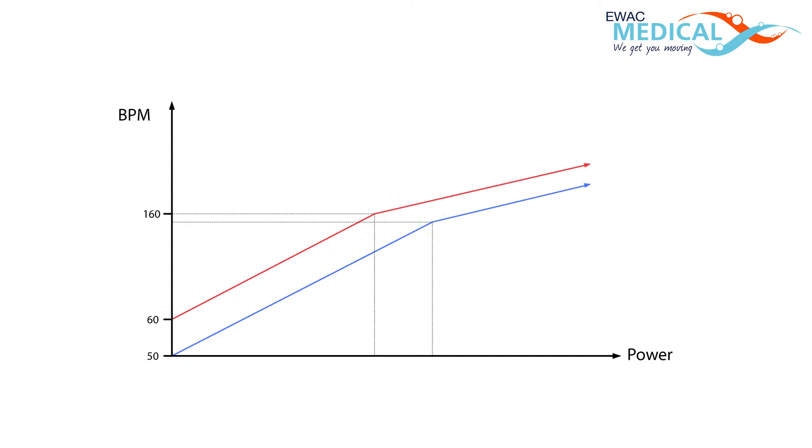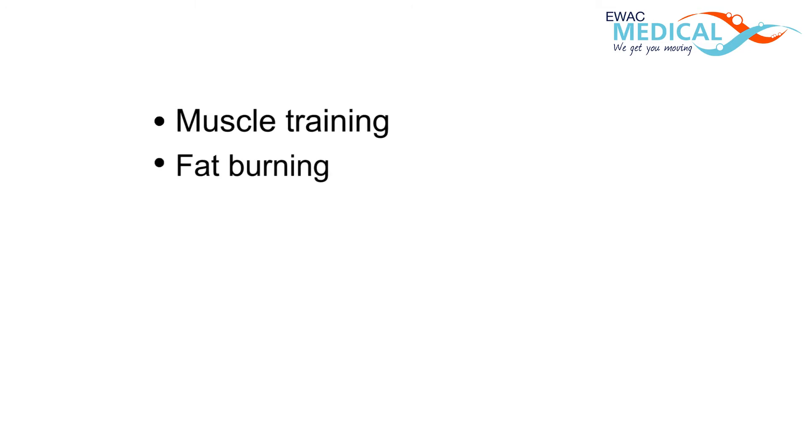And as a consequence, in water the anaerobic threshold is moved to a higher power output level. This means that in water the human body can sustain a higher power output before switching to anaerobic combustion. Therefore exercises such as muscle training and fat burning are much more effective in water.